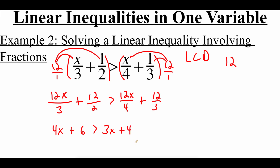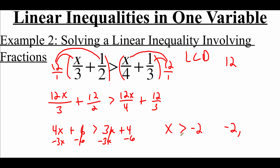Now we want all variables on one side and numbers on the other. Subtracting 3x from each side and subtracting 6 from each side: 4x minus 3x gives x, the 6's cancel, greater than, and 4 minus 6 gives negative 2. So x is greater than negative 2. In interval notation, negative 2 is the smallest value but is not included since we don't have the equals portion, so it gets a parenthesis; the interval runs to positive infinity with a parenthesis: (−2, ∞).